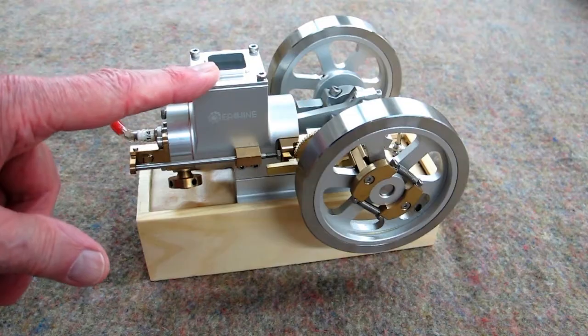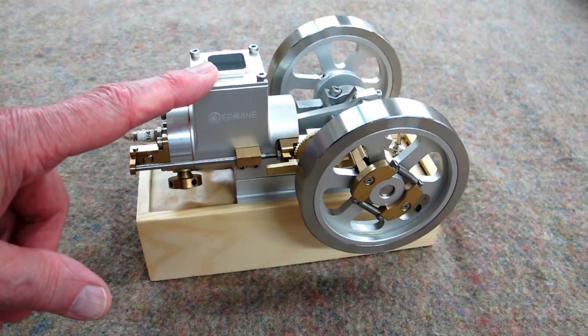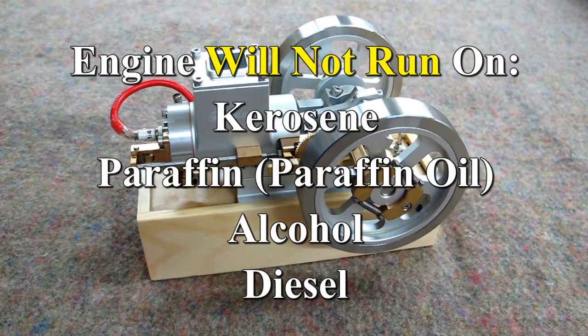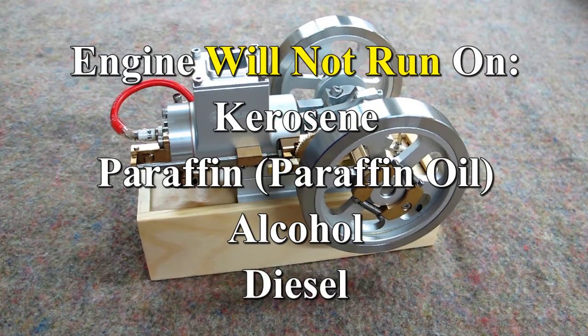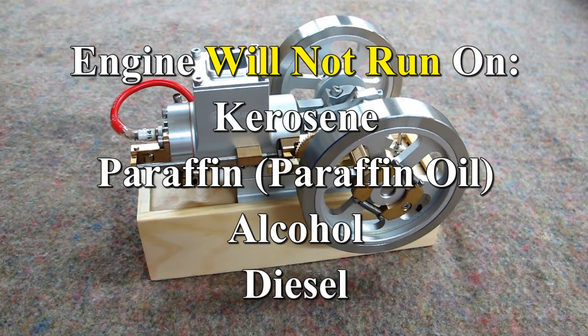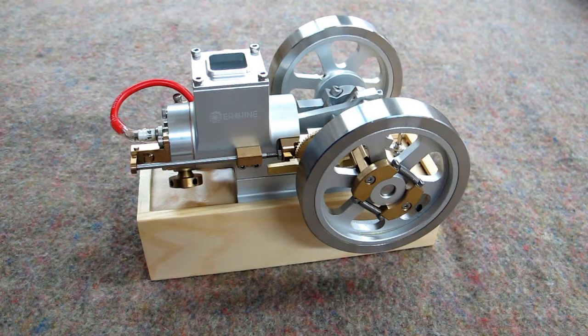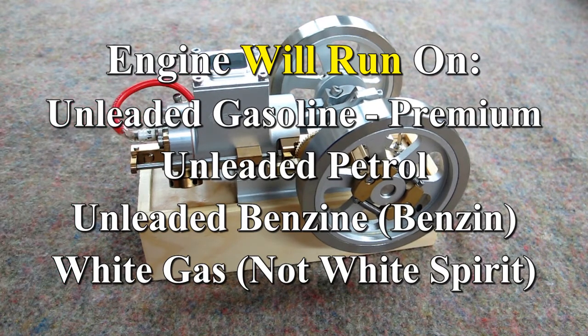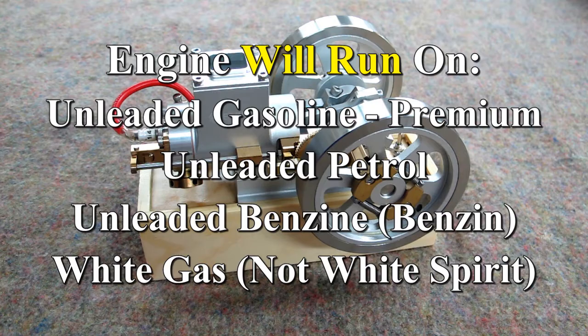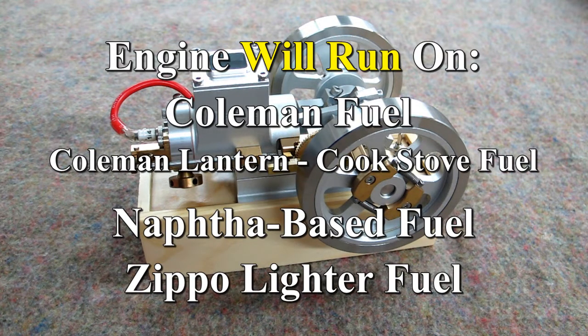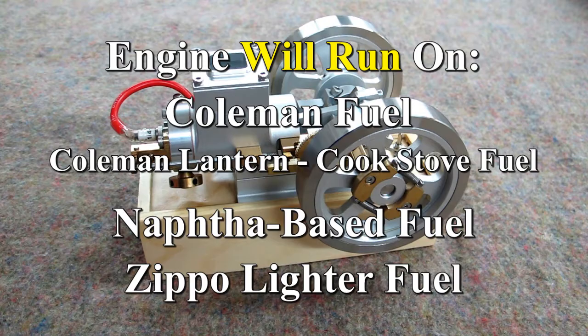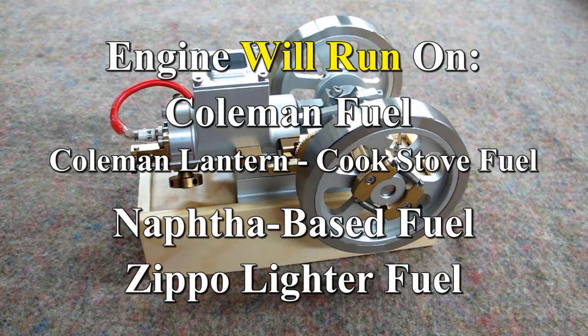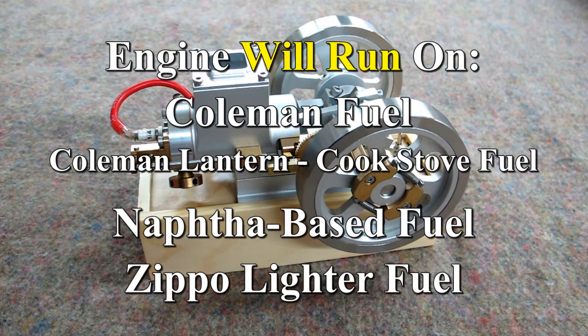This is mistakenly shown on the Banggood website that it will run on kerosene or gasoline. It will not run on kerosene. It will not run on paraffin. It will not run on paraffin oil. It will not run on alcohol. It will not run on diesel. This will run on unleaded gasoline, unleaded petrol, unleaded benzene, white gas. It will run on NAFTA. NAFTA is what Coleman lantern fuel is. It will run on Zippo lighter fluid. Zippo lighter fluid is the same as Coleman lantern fuel. It's NAFTA or NAFTA based fuel.